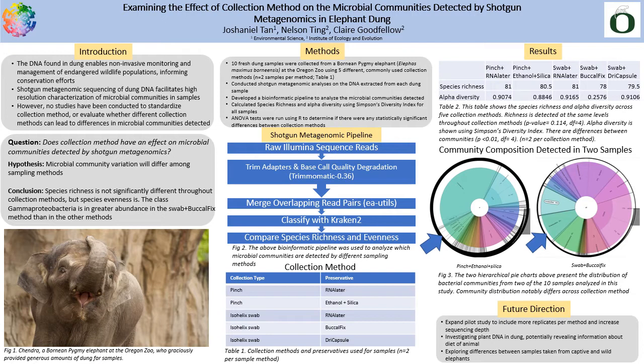Specifically, shotgun metagenomic sequencing of DNA from dung, where all the DNA in the dung sample is sequenced, represents an exciting new development in molecular analysis, enabling high-resolution characterization of gut microbiome variation.